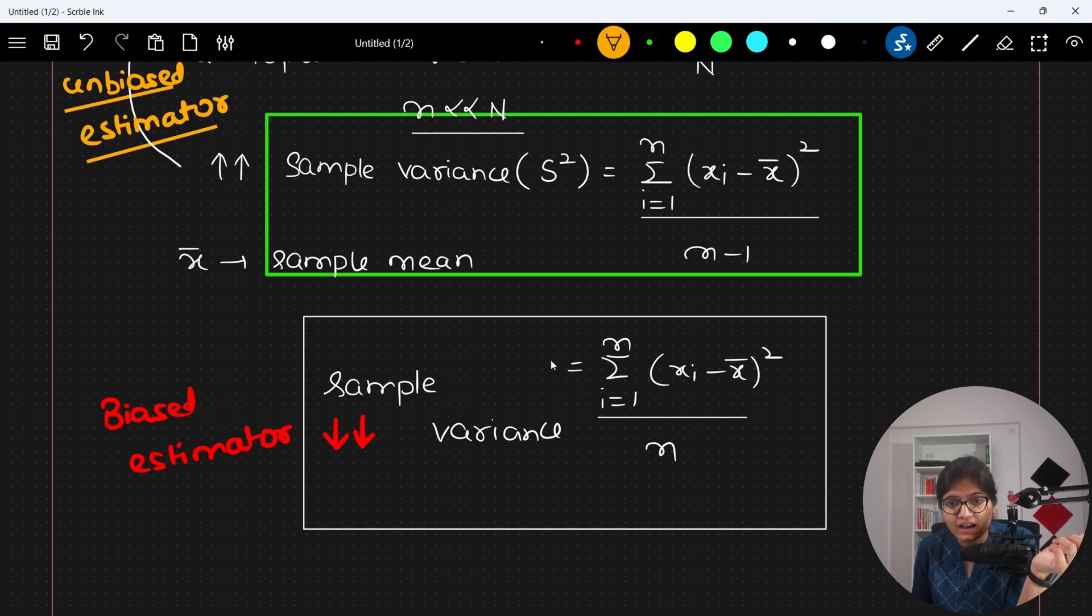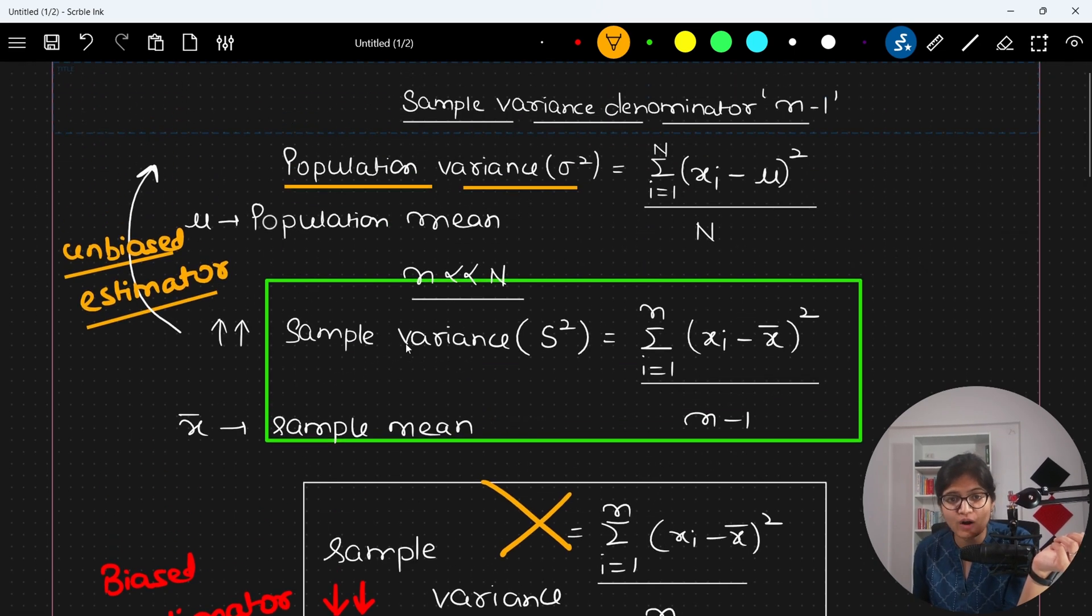That's why this is highly not recommended formula. And this is the standard formula to calculate something which we called as a sample variance. So that's why there is a division by N minus 1 because that follows the unbiased estimator, not the below one.